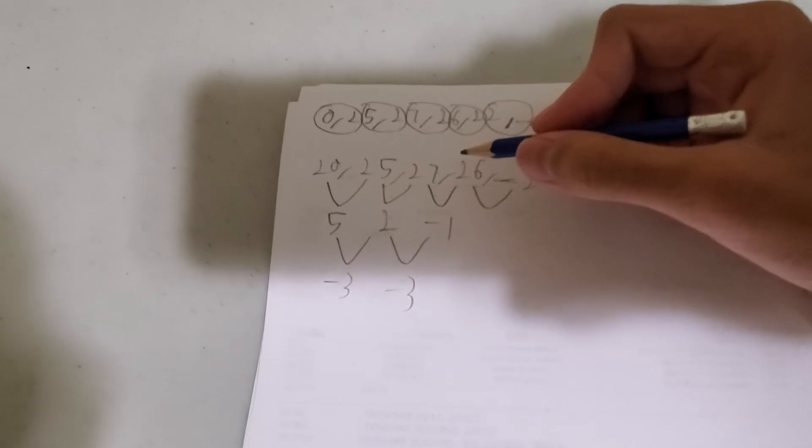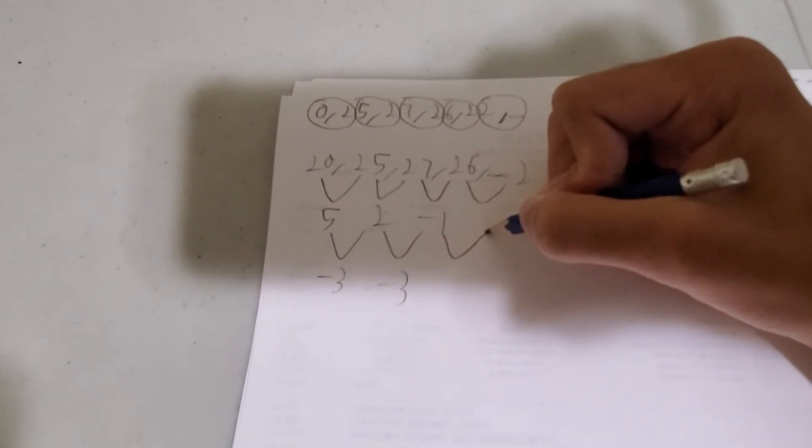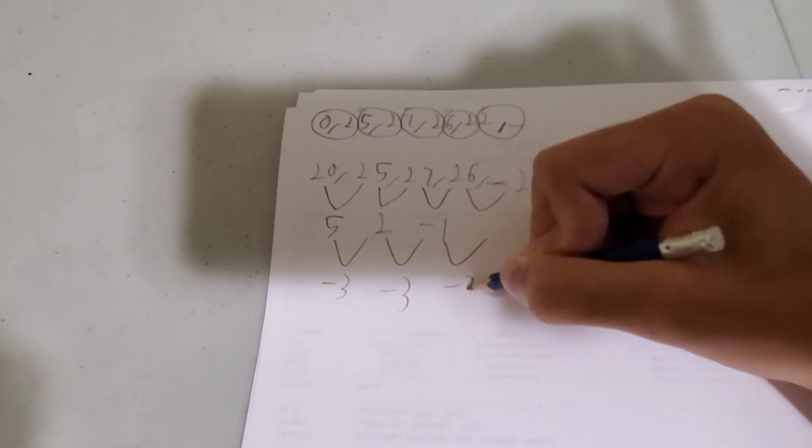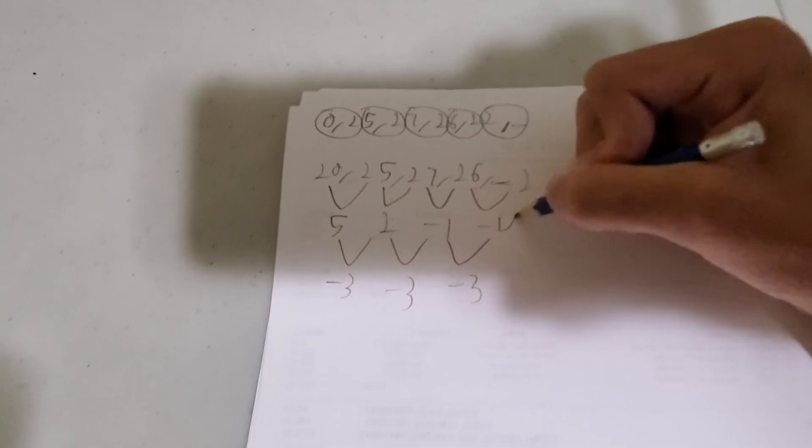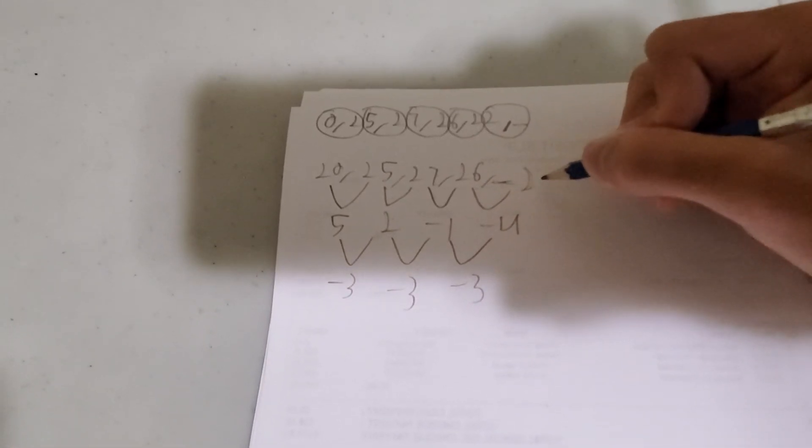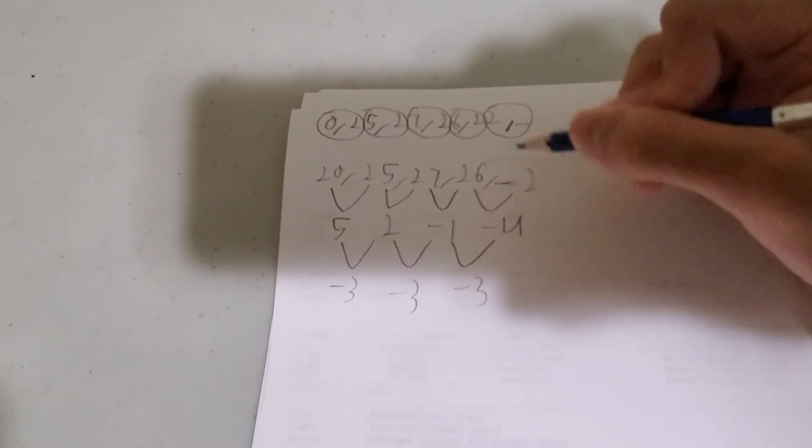Which means that the second differences for this also has to be same. So minus 3 again, and we know that minus 1 minus 3 is minus 4. And that satisfies the 2 at the end here, because 26 minus 4 is 22.